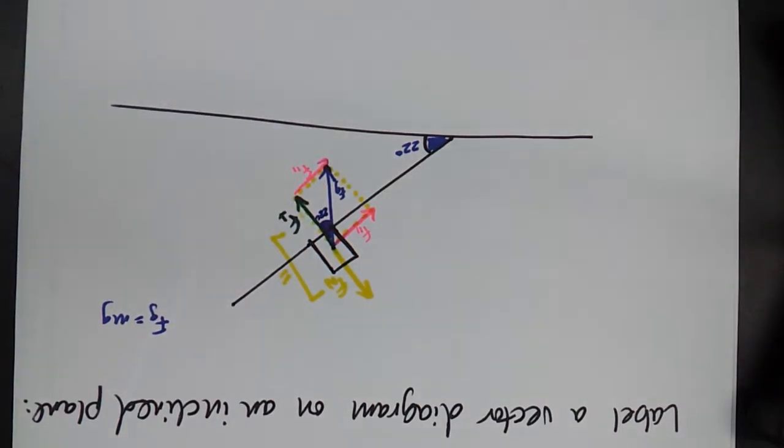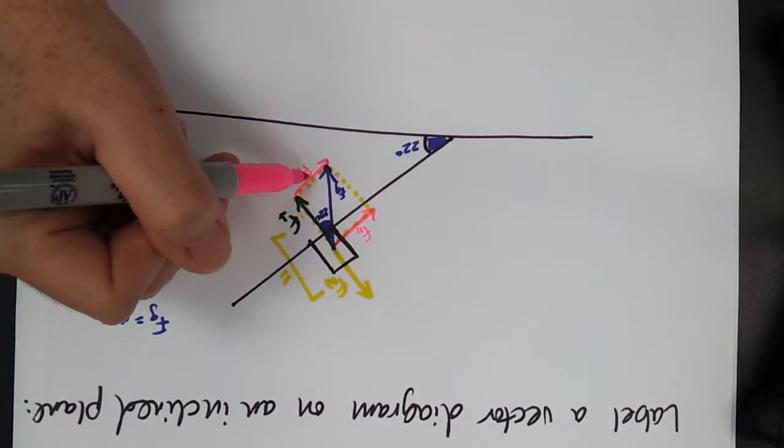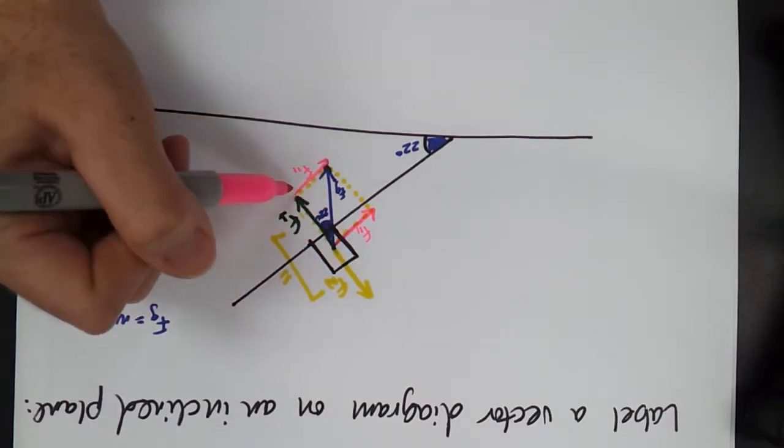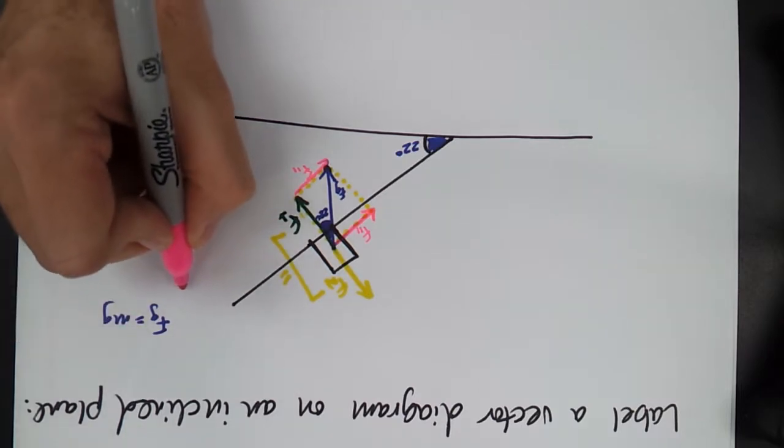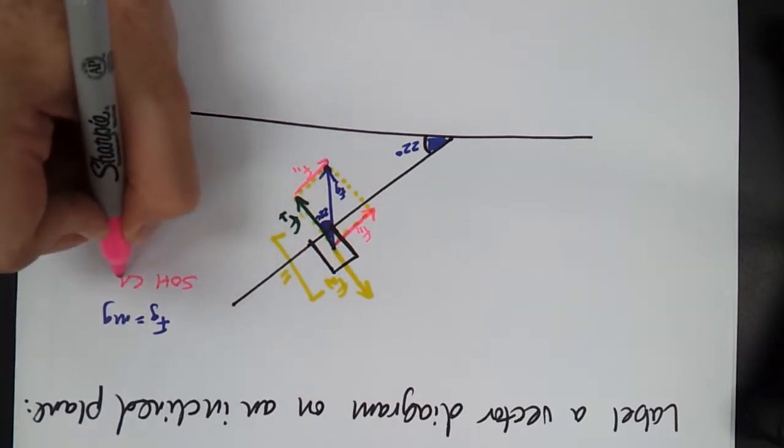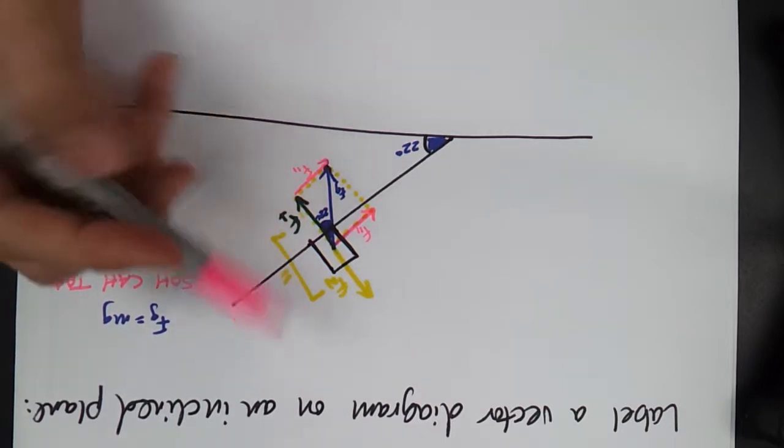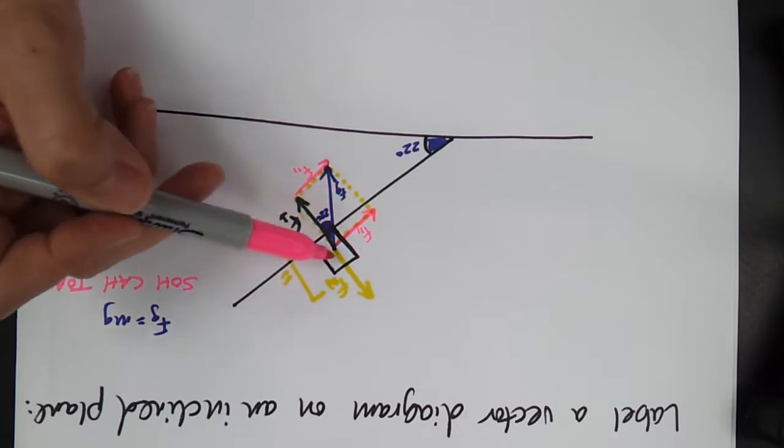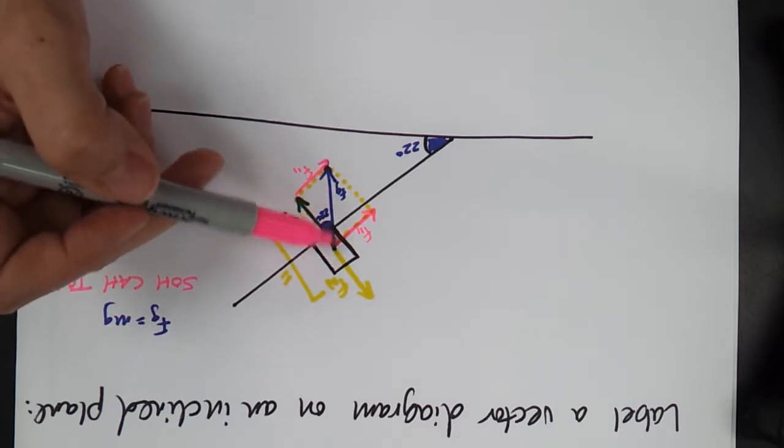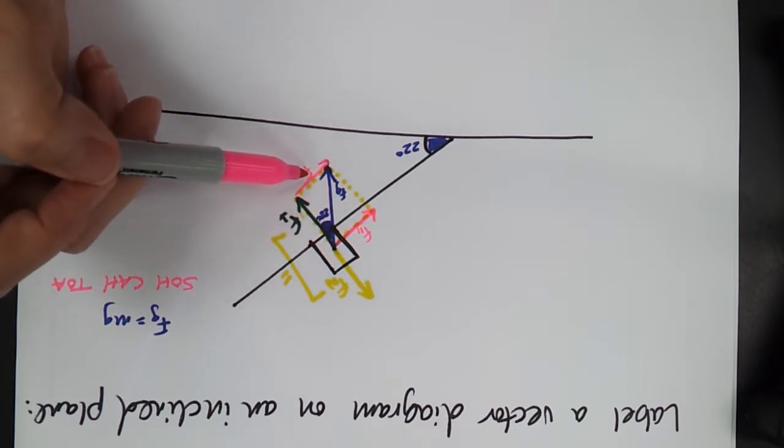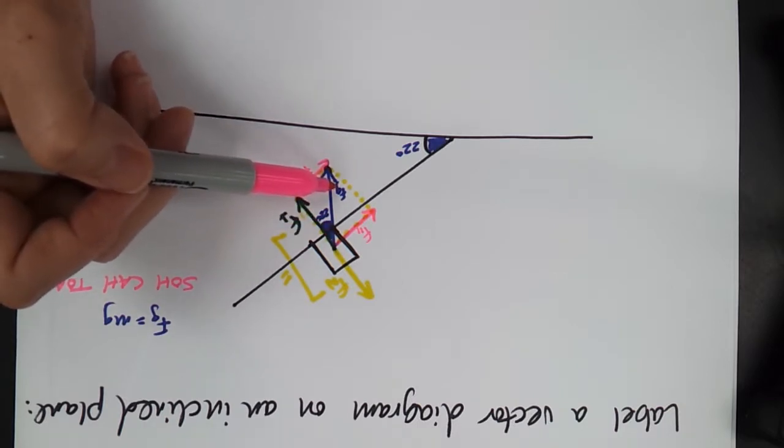So then to basically label all of our stuff here, this F parallel is opposite of the angle. This is the hypotenuse, this is adjacent. So remember back to SOHCAHTOA. So if this is opposite, because we know this value, Fg, we would normally give you the mass. You know how to calculate Fg. It'll be pretty easy and straightforward. So this is the opposite side. We know the hypotenuse side given the mass.